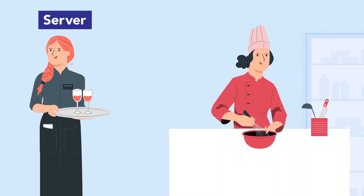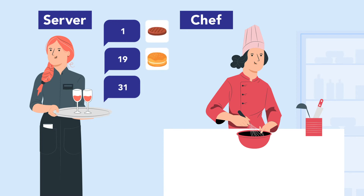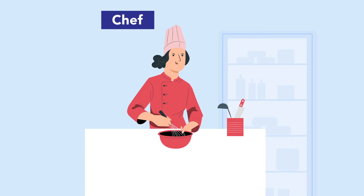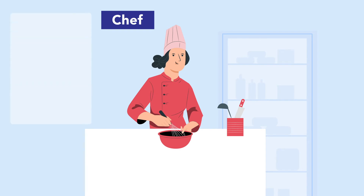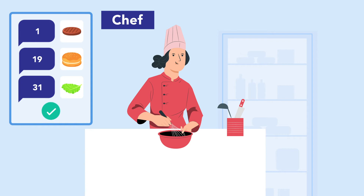The server goes to the kitchen, or the chef in the kitchen, and says either a number 1, 19, or 31 — or perhaps a burger, a bap, and lettuce. So let's zoom over to the chef's world. They just received a request from a trusted server, so they know for sure that the menu items exist and payment succeeded.